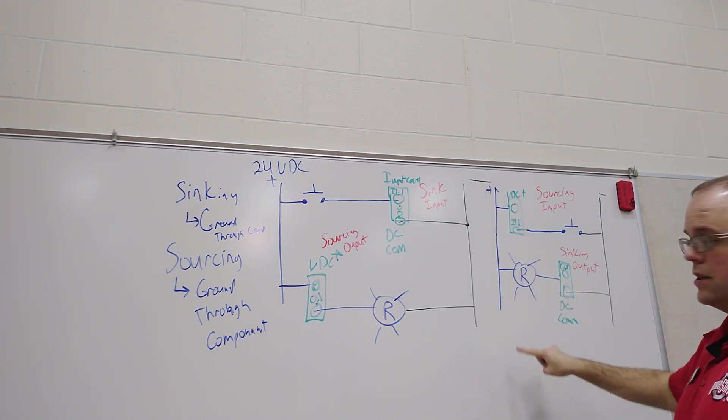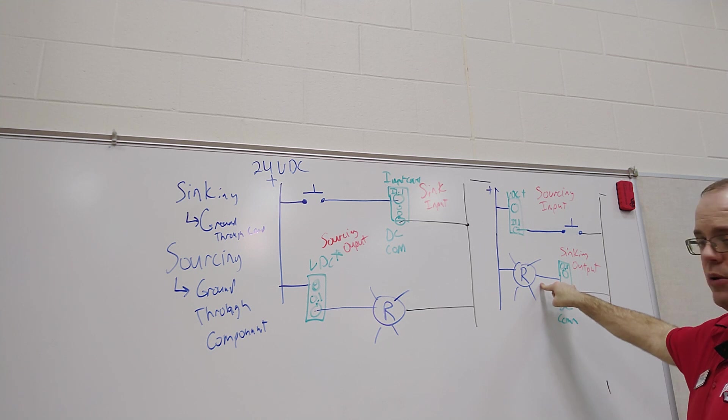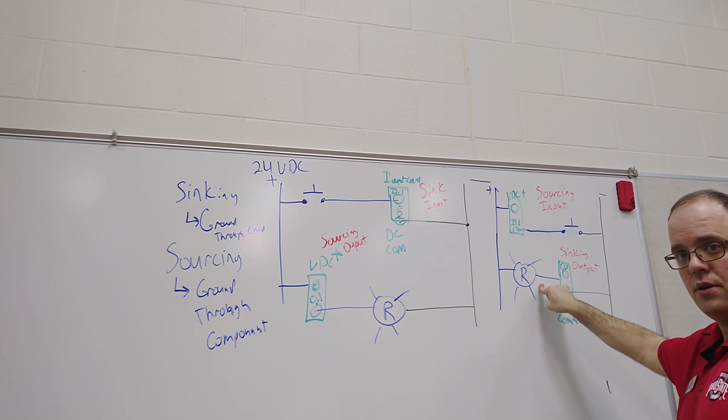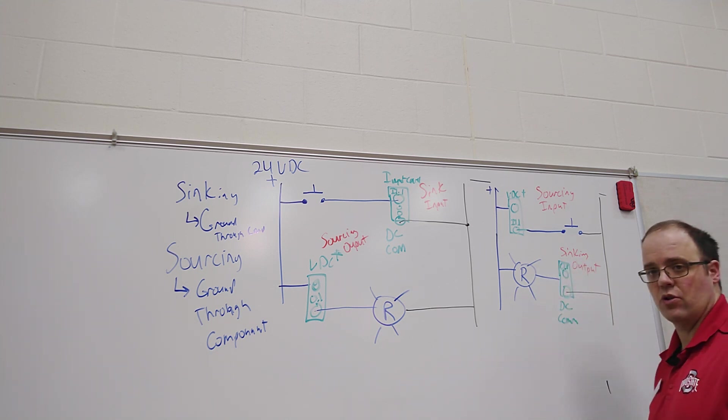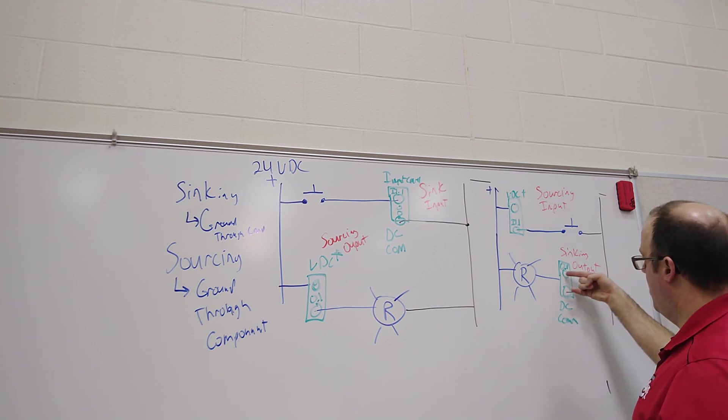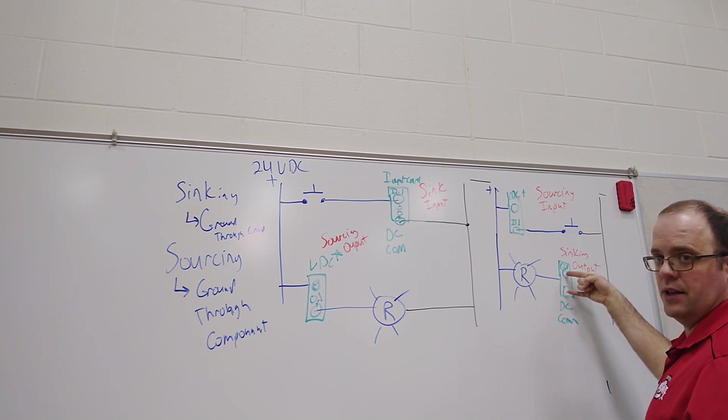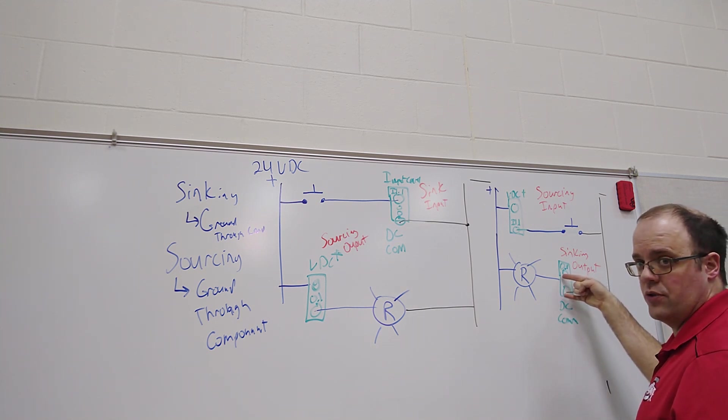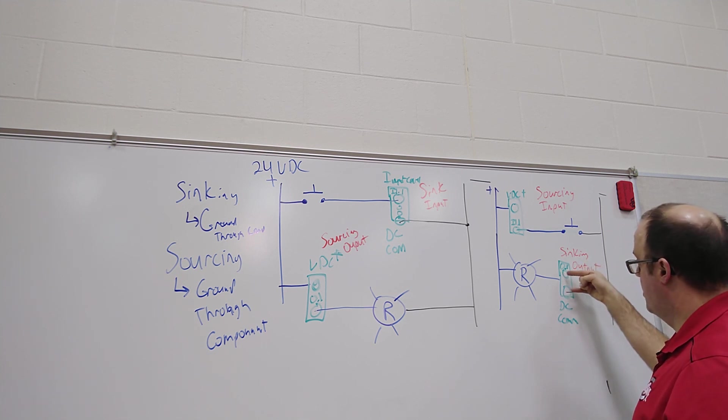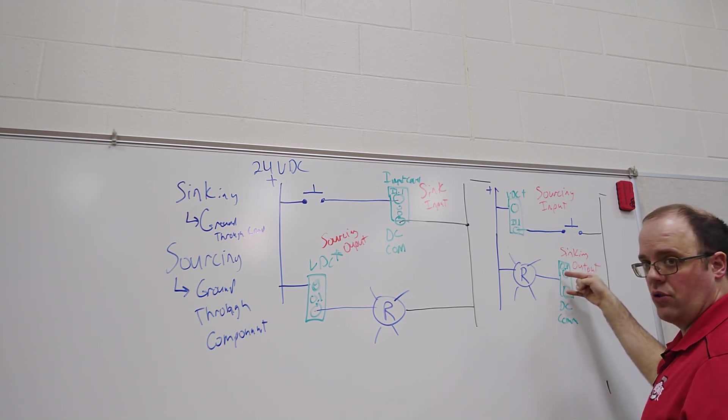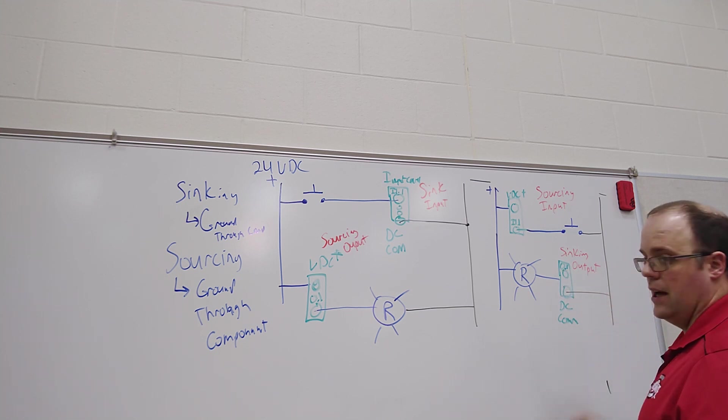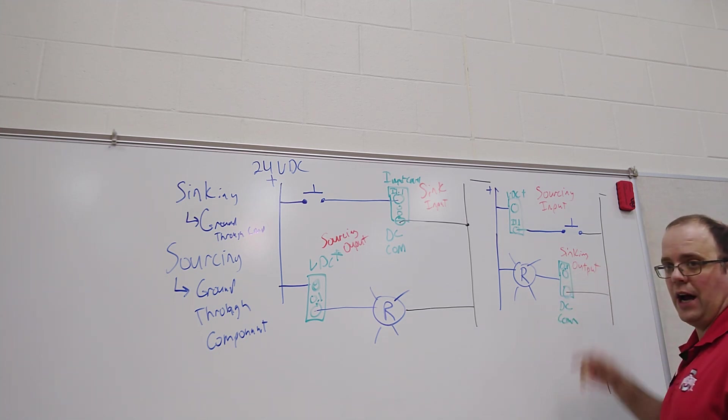But again in this case I'm supplying power right here at all times, so basically this results as an open ground. And if the output is not on, if I go across here like this I should read 24 volts. But when the output turns on I should read zero volts across this, because I'm grounding through this. This is an open ground.